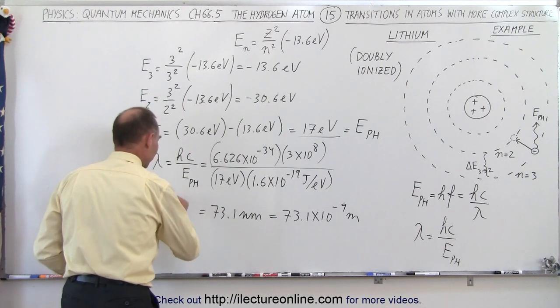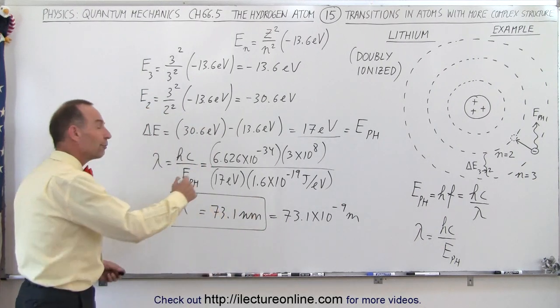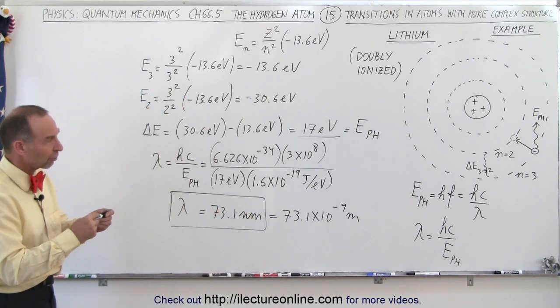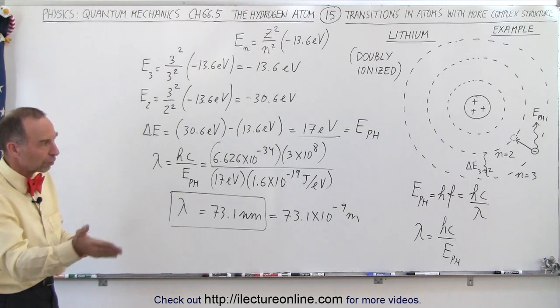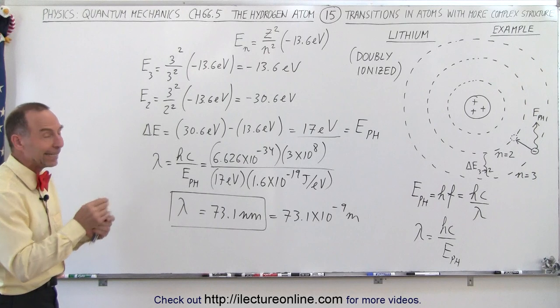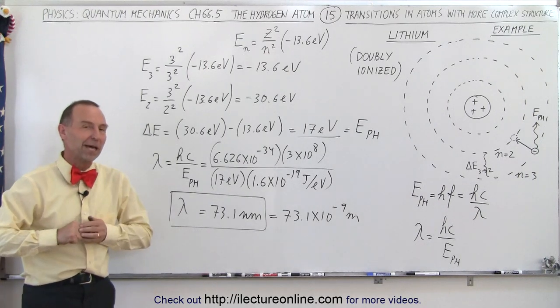So that would be the wavelength of the photon that's given off or emitted when the electron jumps from a higher energy level down to a lower energy level, from the third level down to the second level, in a doubly ionized lithium atom. And that's how it's calculated.